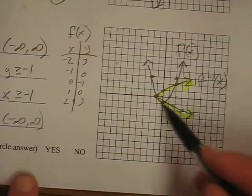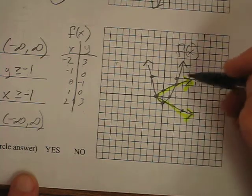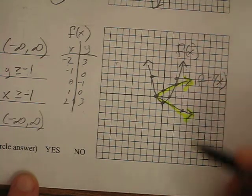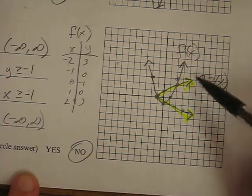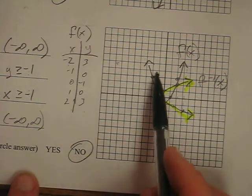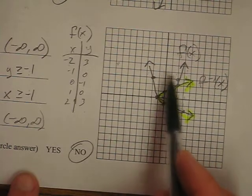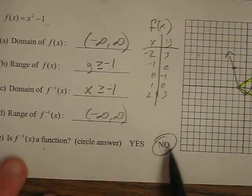Is the inverse a function? If you look at this, and we can do the vertical line test this time. The yellow highlighted part fails the vertical line test. So is it a function? No, because the domain repeats. If you do the horizontal line test on the function, it touches it twice. So the inverse is not a function.